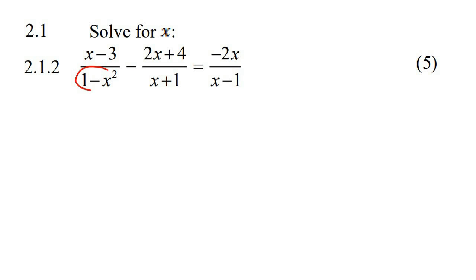When you get your common denominator, you first need to make sure that all of these denominators are factorized. This one is not factorized. That is a difference of squares. So we can change that to (1-x)(1+x).